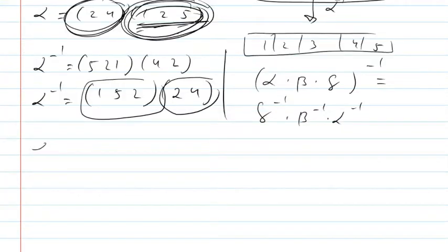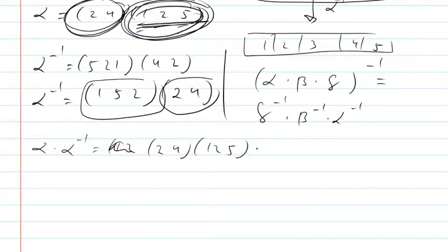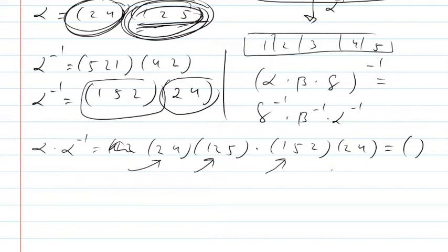If you wanted to test this, you can take the composition of alpha with its inverse: (2, 4), (1, 2, 5), then (1, 5, 2), (2, 4). You put 2 in, it becomes a 4; 4 stays a 4; 4 stays a 4; 4 goes to 2 — so 2 goes to 2. And that would happen for every number. That's what happens with inverses: it undoes the move.